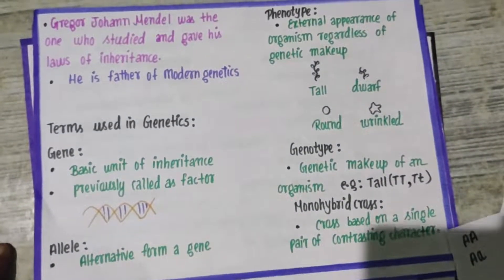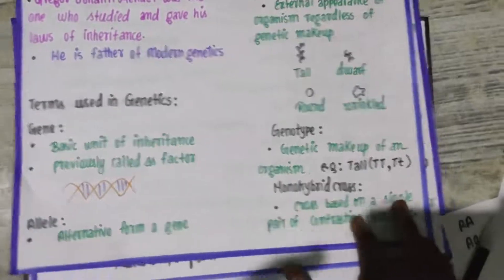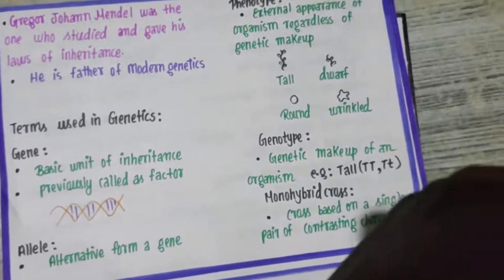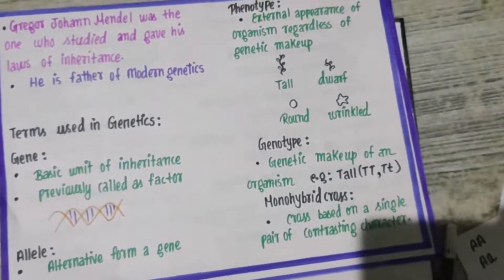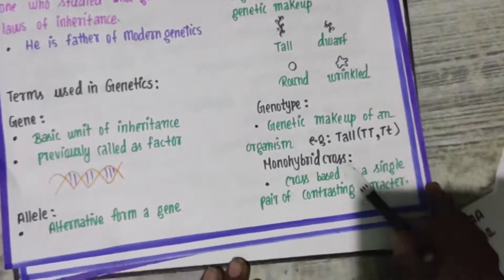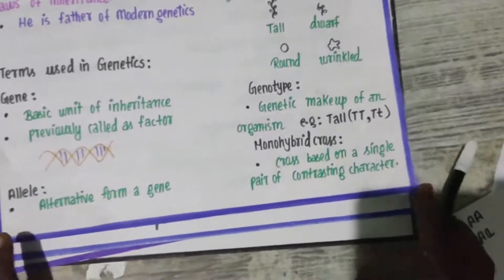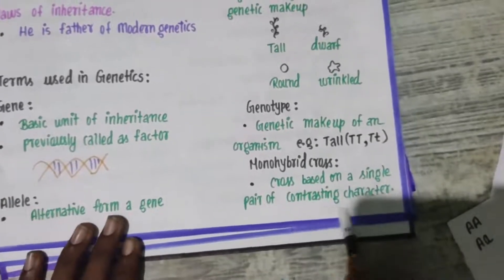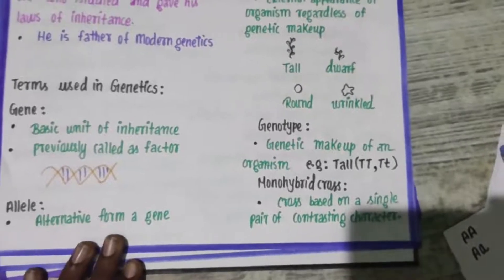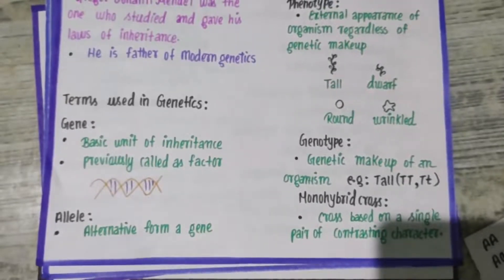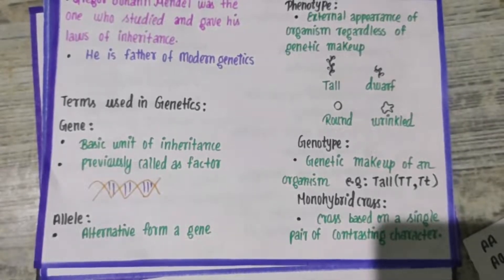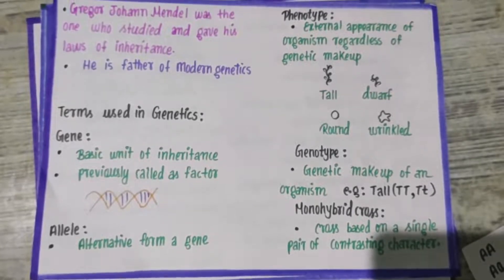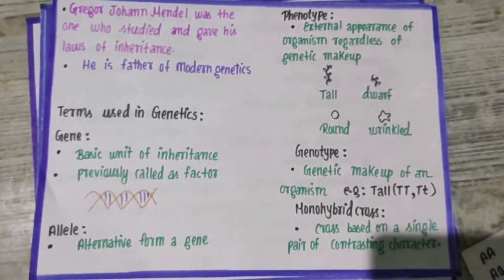What is monohybrid cross? A monohybrid cross involves one pair of contrasting characters. For example, if Mendel takes height as the contrasting character — one plant is pure tall and the other is pure dwarf — and crosses them, that is what we call a monohybrid cross: a cross based upon a single pair of contrasting characters.